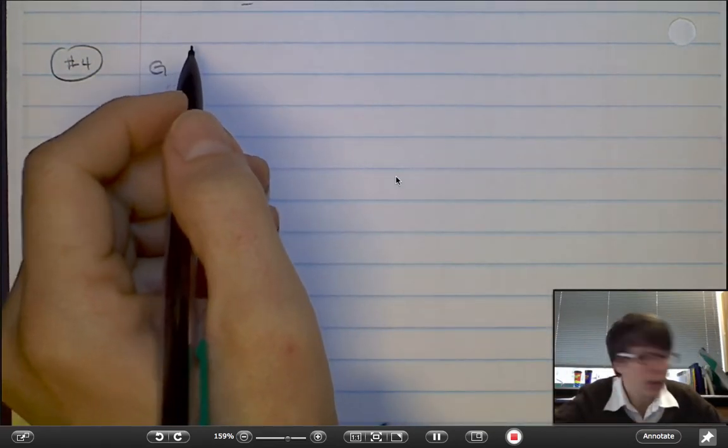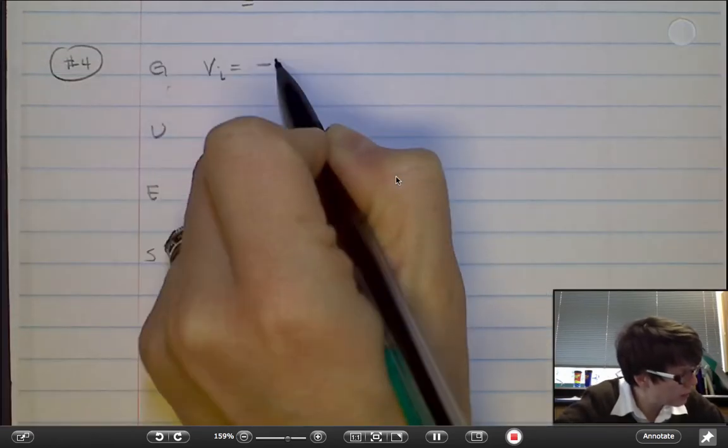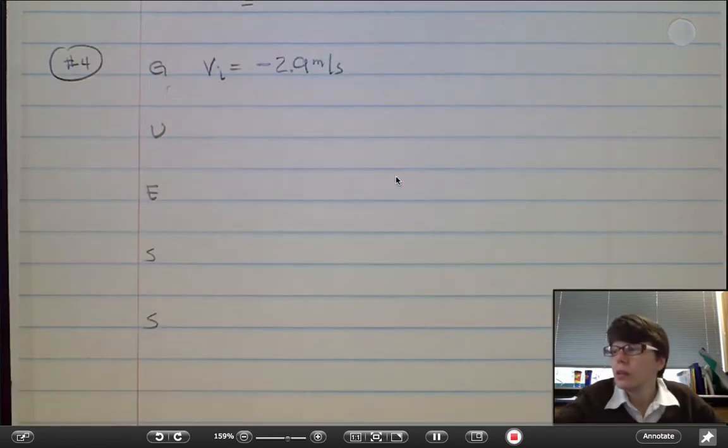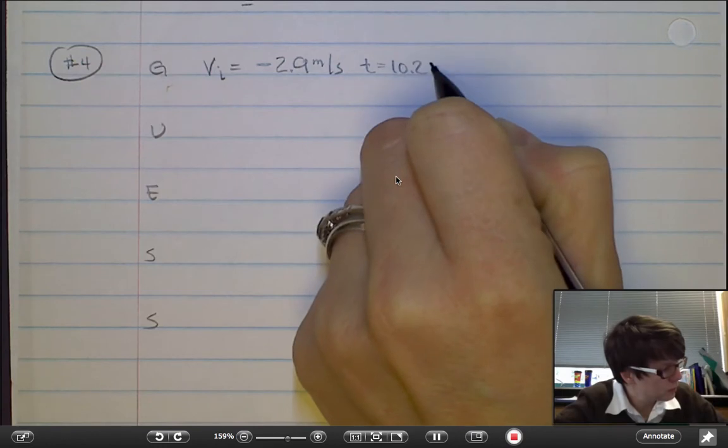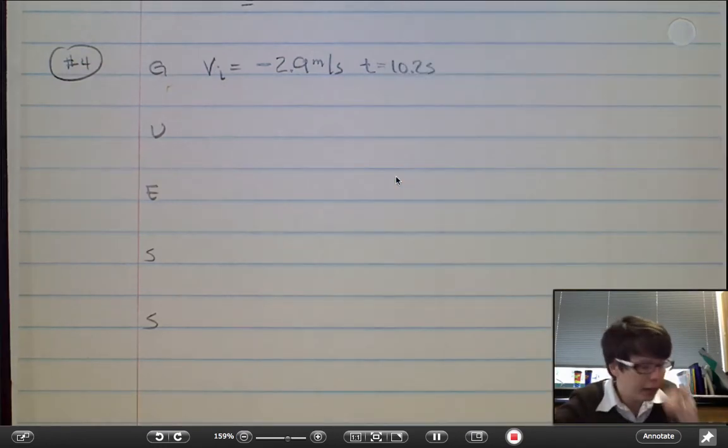The first number I'm given is an initial velocity. It is downward. Do not forget the negative sign. I know a time until it hits the water.